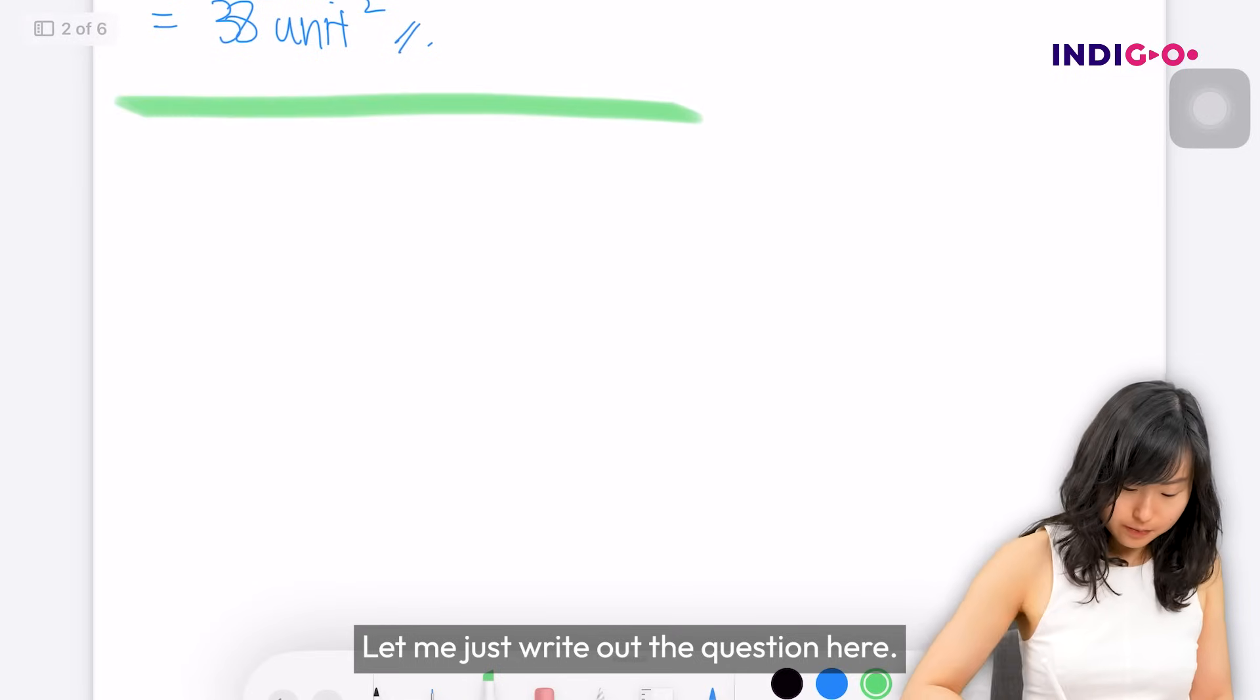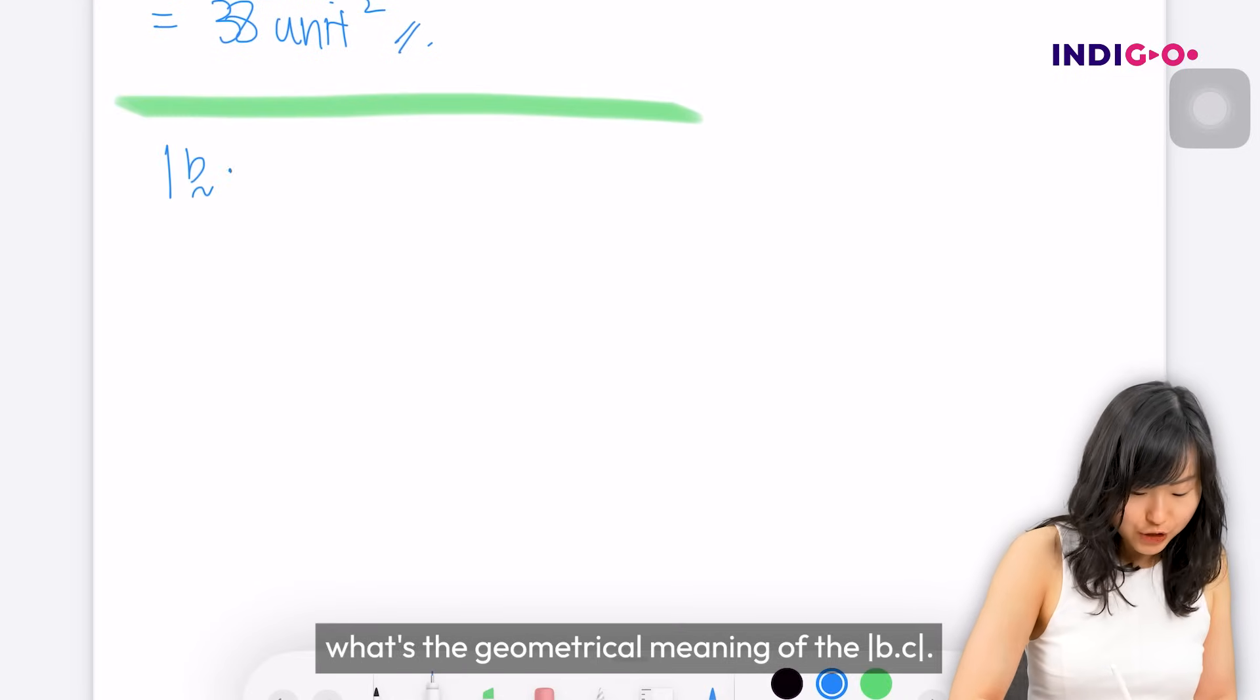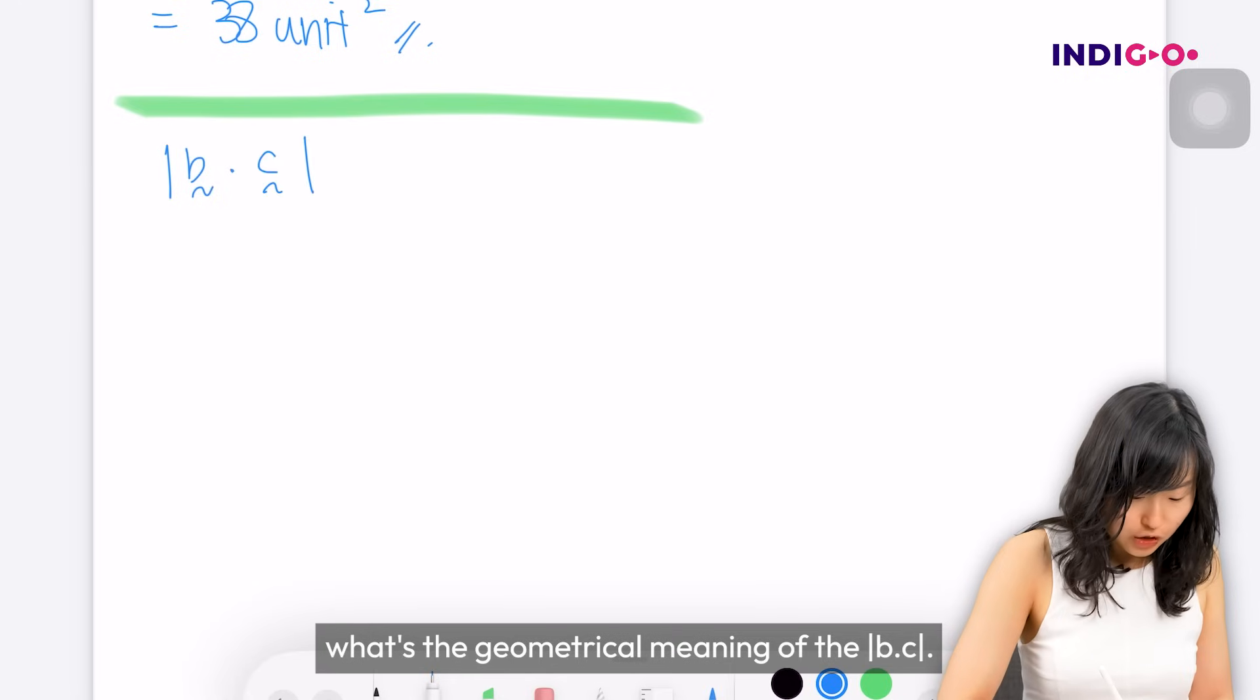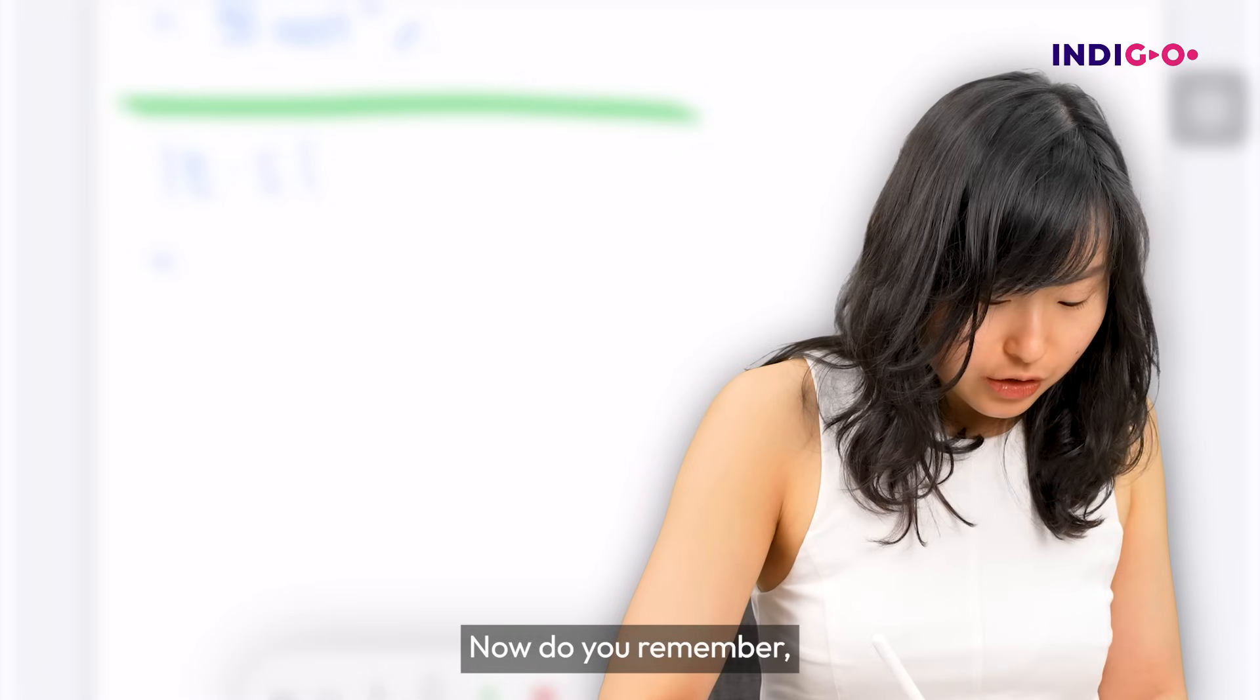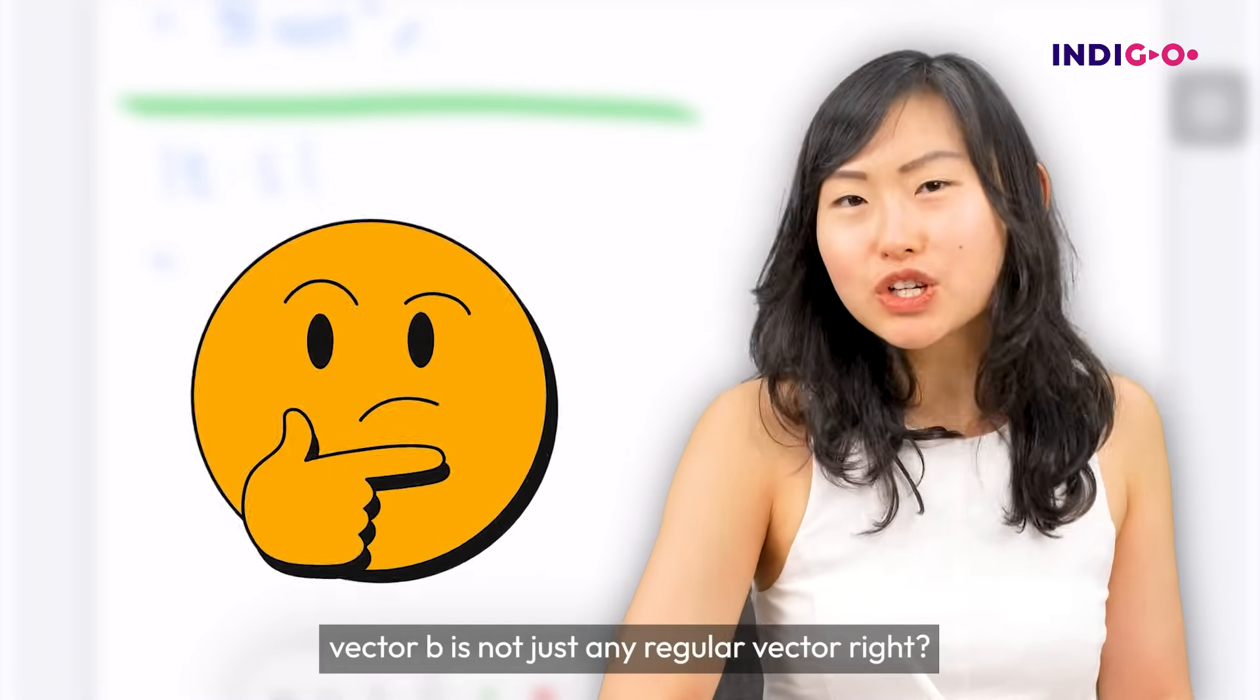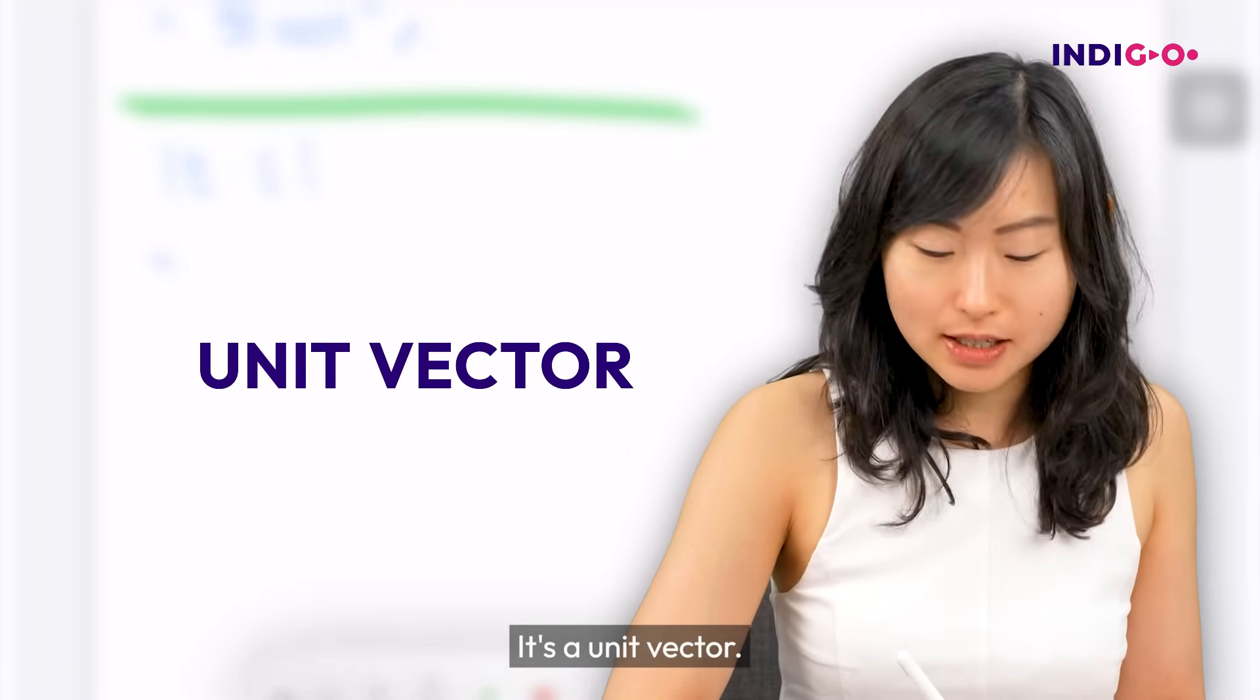Let me just write out the question here. I'm interested in finding what's the geometrical meaning of the vector b dot the vector c. Now do you remember vector b is not just any regular vector, right? It's a unit vector.